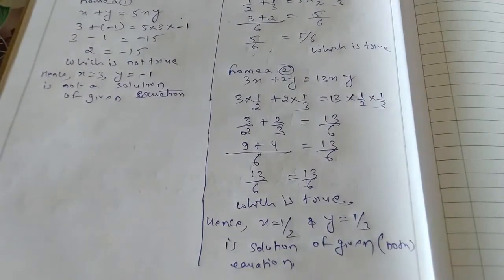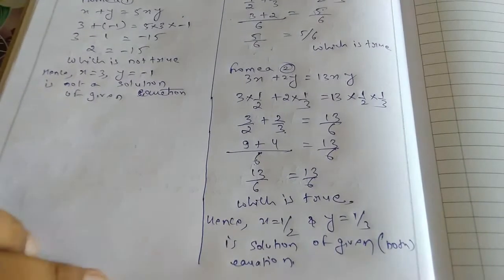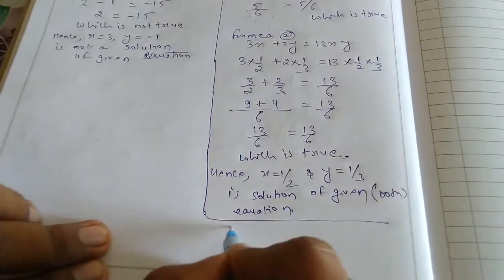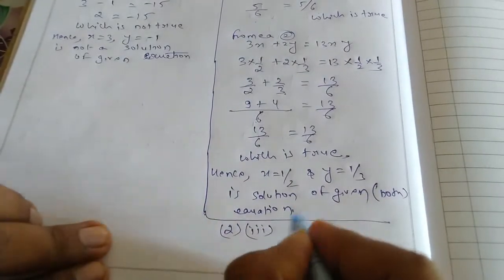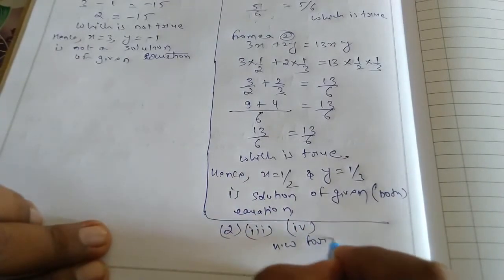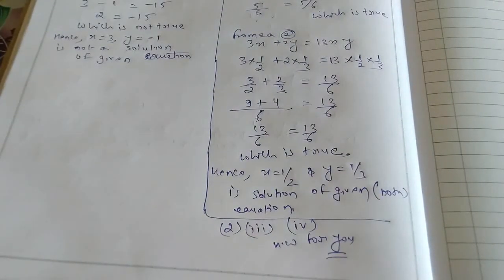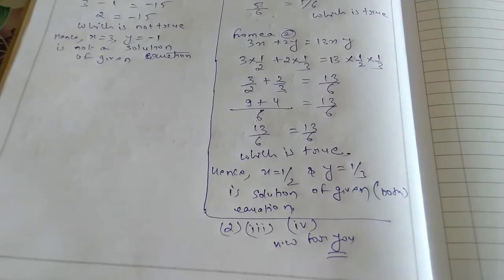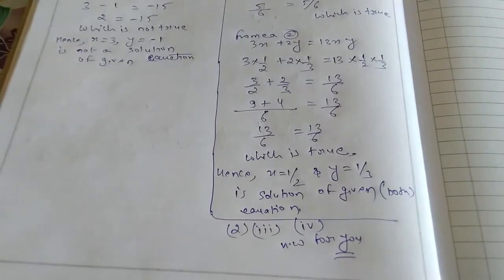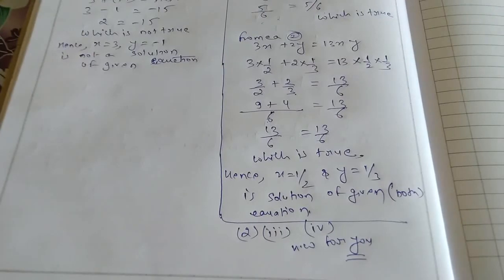Clear? Is it clear? So in this way you have to do Question Number 3 and Question Number 4. I am giving homework for you — do it yourself. Second's third and second's fourth one is homework for you. Today we have stopped the class. In the next class, we will discuss some new things from Question Number 30. Thanks to all of you students, be safe, take care.